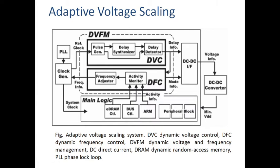This voltage scaling chip will detect the delay. If there is any delay in the critical path — generally the signal is passing through the circuitry — we will definitely have a critical path. If there is any delay in the critical path, according to that delay, they will scale the voltage. That scaled voltage signal is given to the DC-to-DC converter, which is the off-chip converter.